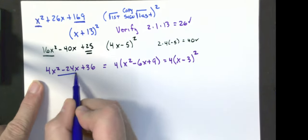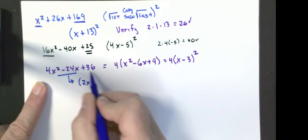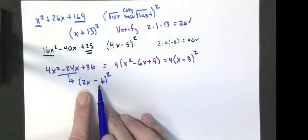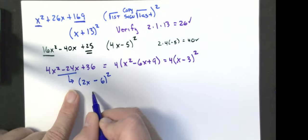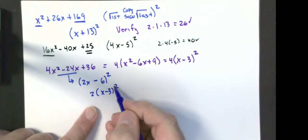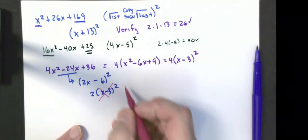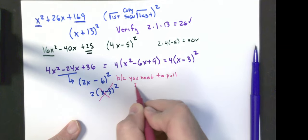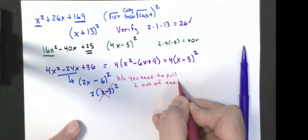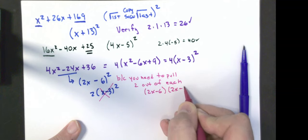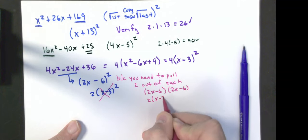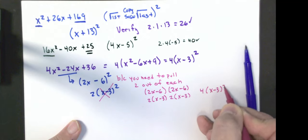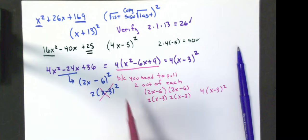If you try to go directly without factoring out the GCF first, you'd take the square root of the first and last to get (2x minus 6)², but notice it's not factored completely — you'd still need to pull a 2 out. Where students go wrong is they pull just one 2 out, but remember this is (2x minus 6)(2x minus 6), so you can pull a 2 out of each factor. That gives you a total of 4 times (x minus 3)², which is the correct fully factored answer. Always pull the greatest common factor out first.